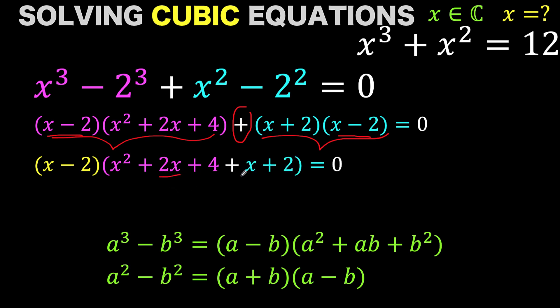Then 2x and x are like terms. 4 plus 2 are also like terms. So let's simplify this further. 2x plus x becomes 3x. 4 plus 2 is 6. Just copy all the rest.